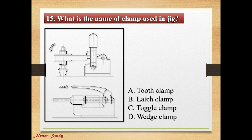Question: What is the name of the clamp used in a jig? Options: tooth clamp, latch clamp, toggle clamp, wedge clamp. Right answer is toggle clamp.